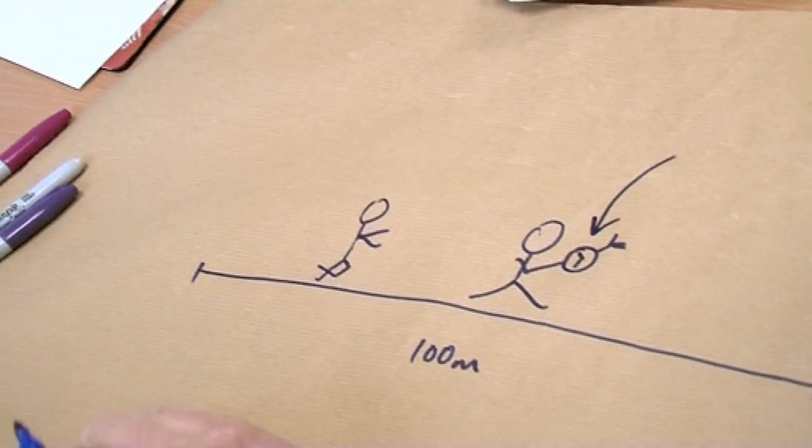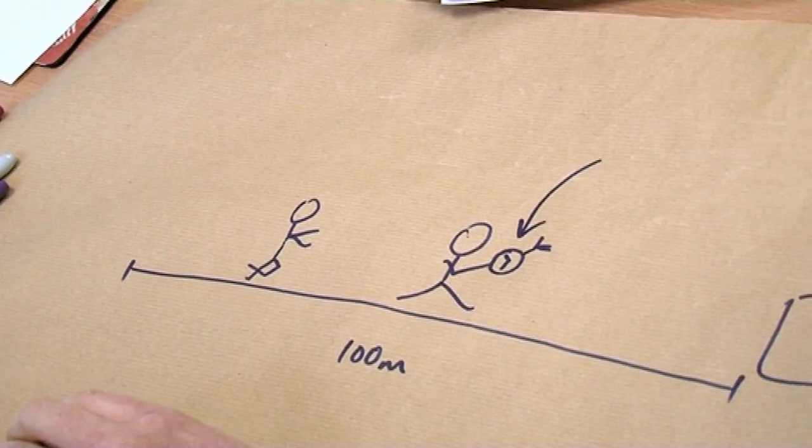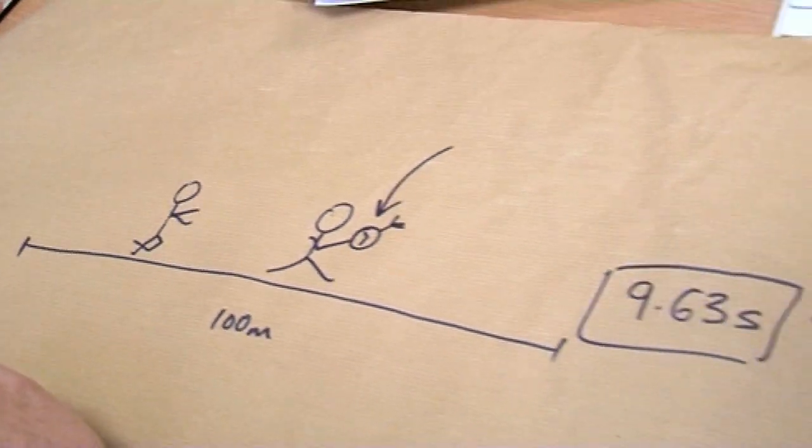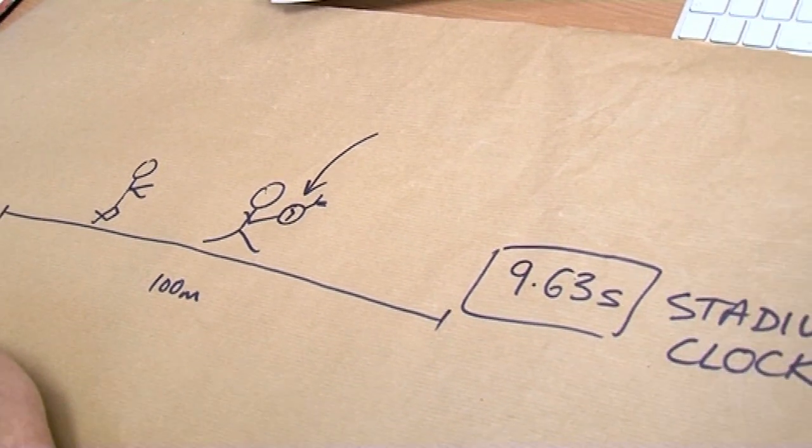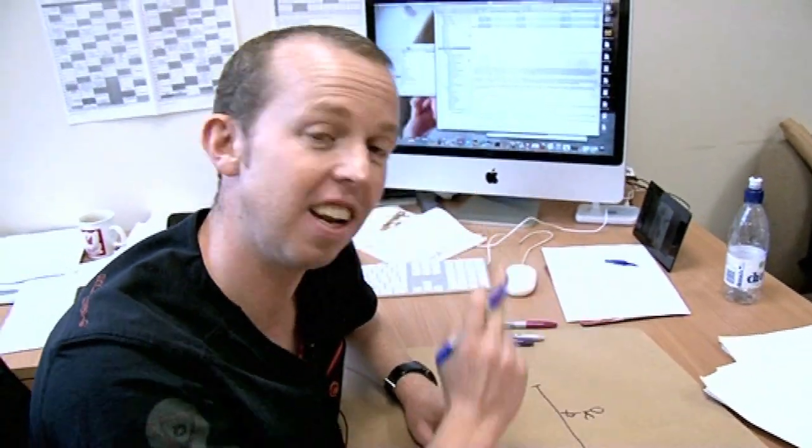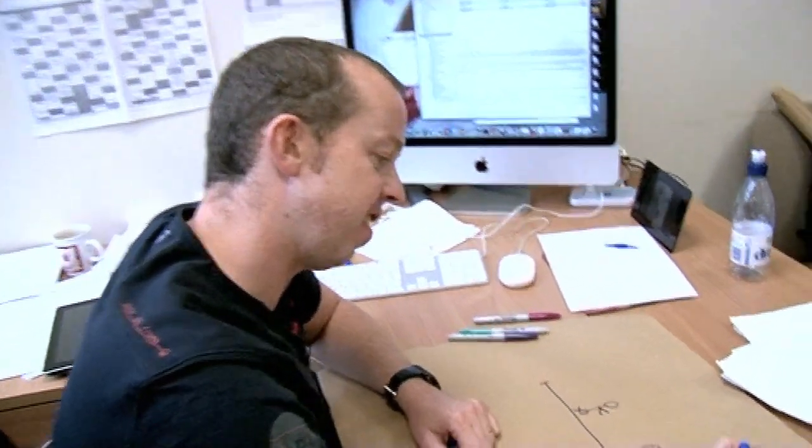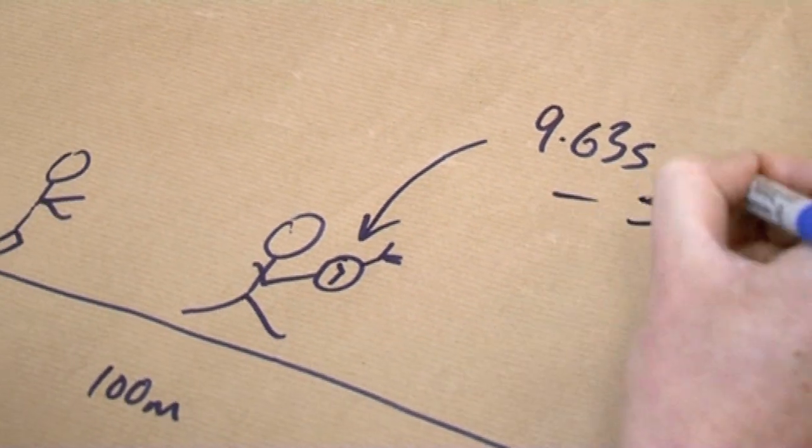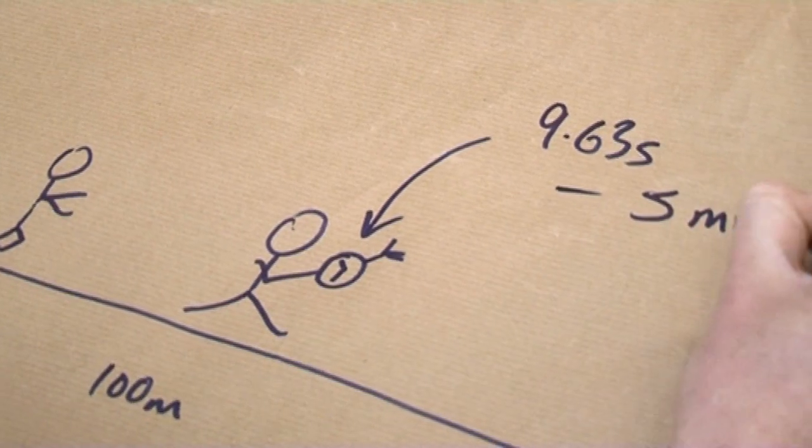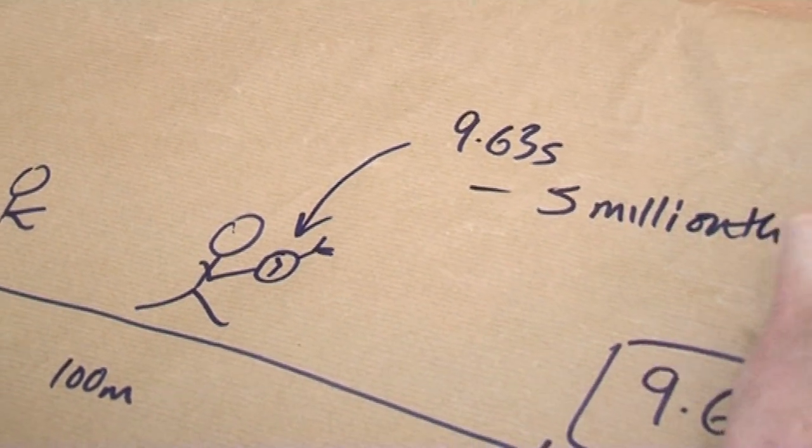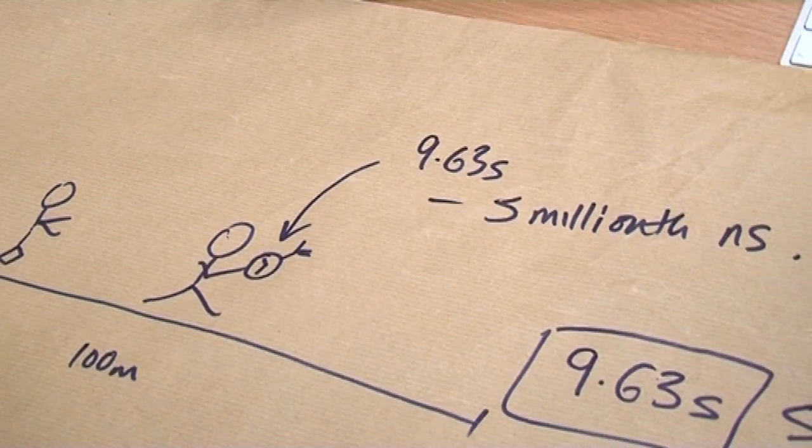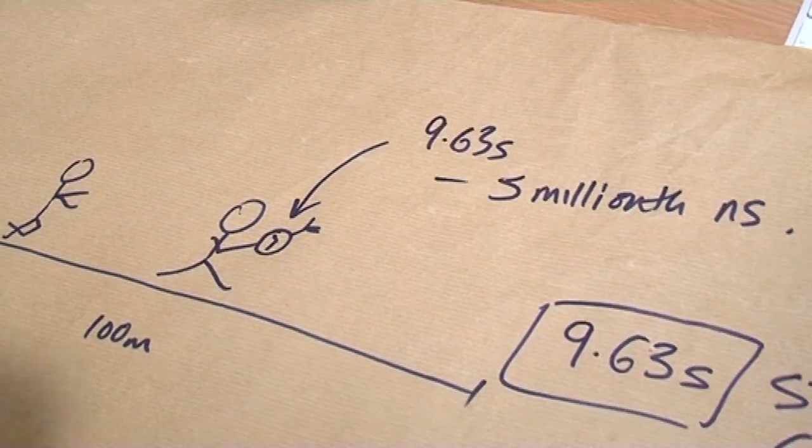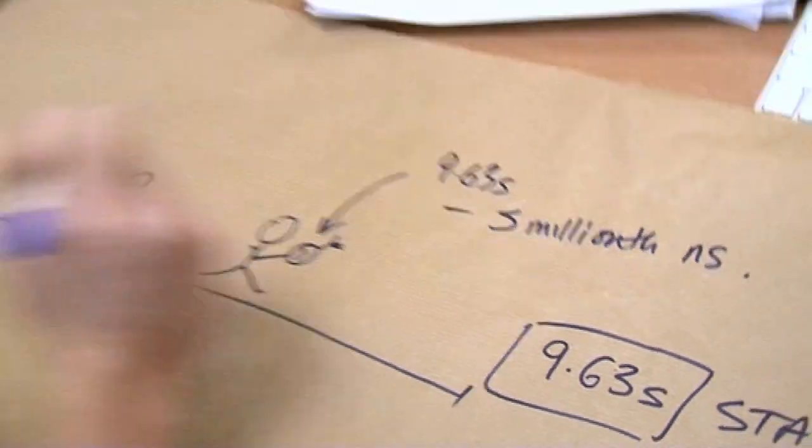So, what did Usain Bolt's clock read at the moment that he crossed the finishing line? Now, you might think, well, it's 9.63 seconds, but it's not. It's actually a little bit less than that. It's 9.63 seconds less about more or less 5 millionths of a nanosecond.